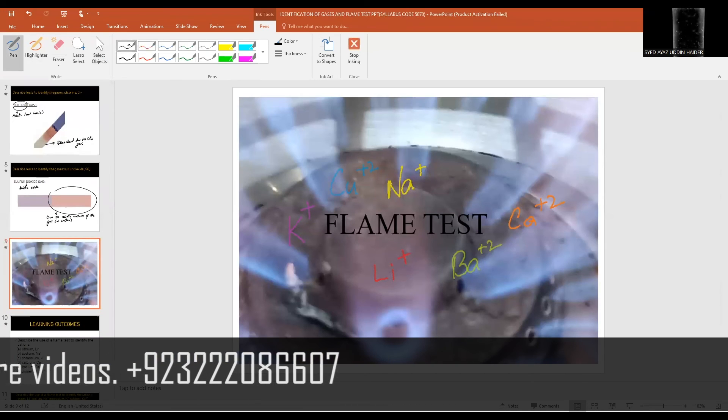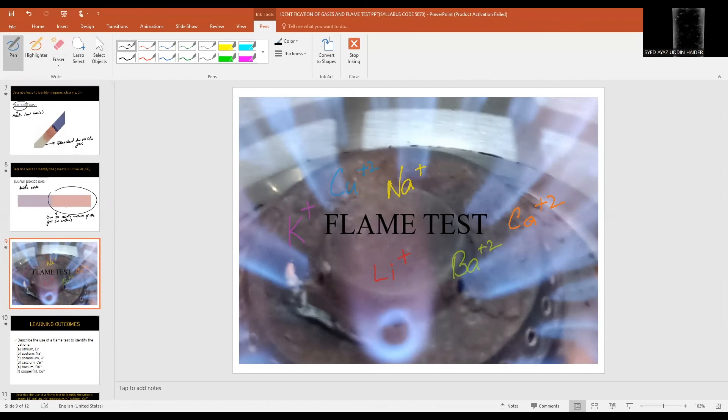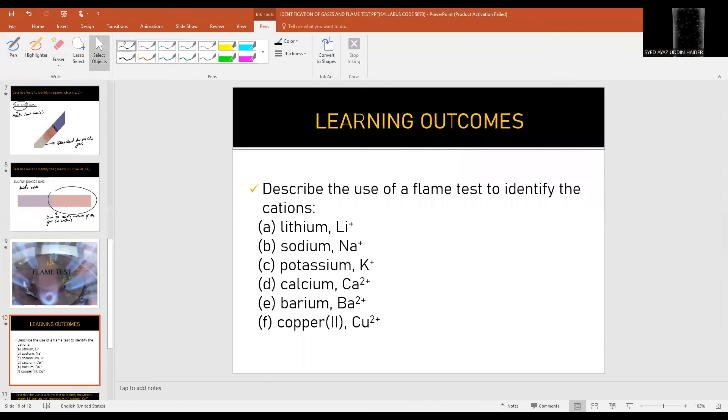Now I will talk about the flame test. This one is a short one. You just need to remember the flame color for some metal ions in the SLO. The learning outcome is: describe the use of a flame test to identify the cations lithium Li+, sodium Na+, potassium K+, calcium Ca2+, barium Ba2+, copper Cu2+.